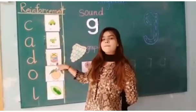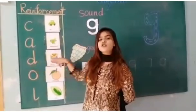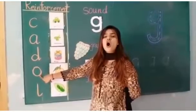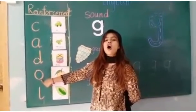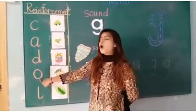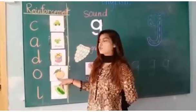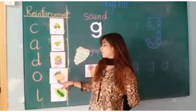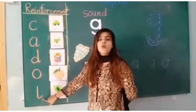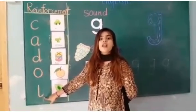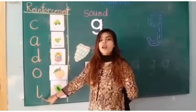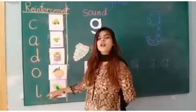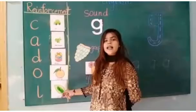D — the drum. O — orange. L — leaf. Which sound is this? L, leaf. Well done. So we are done with the reinforcement of all the sounds.